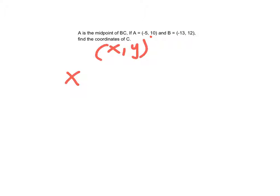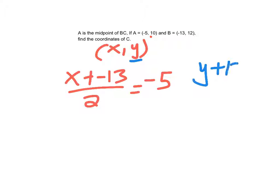So I would have x plus negative 13 over 2 equal to negative 5. And I would have y plus 12 over 2 would have to equal 10. So once again,